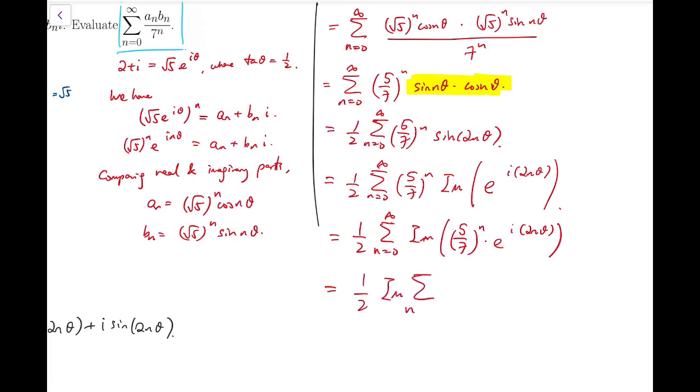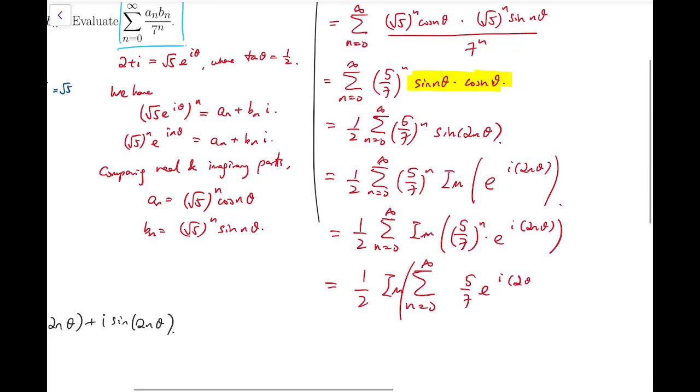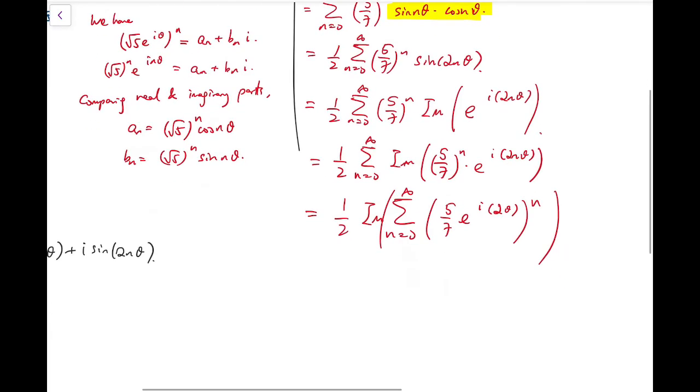I can swap the signs and rewrite this as the imaginary part of the sum of (5/7·e^(i·2θ))^n. Now the sum inside is a geometric series.